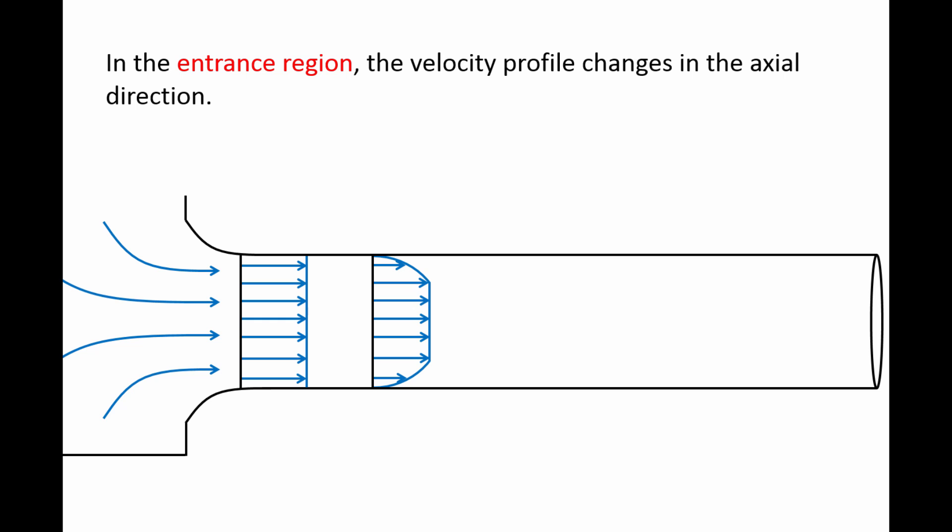As the fluid travels down the pipe, more and more layers will be impacted by this shear stress, deforming the outer layers of the velocity profile. A boundary layer forms and grows in the axial direction. Inside this boundary layer, there are significant velocity gradients and significant shear stress. But at the core of the velocity profile, the velocity gradients are still small and the velocity profile remains approximately uniform. We call the core inviscid because there is negligible shear stress in this region.